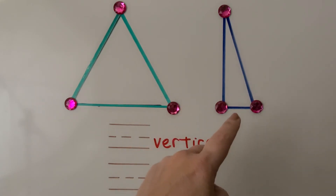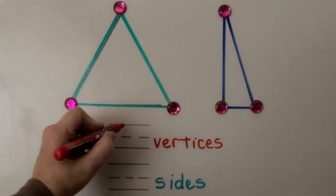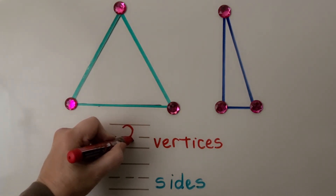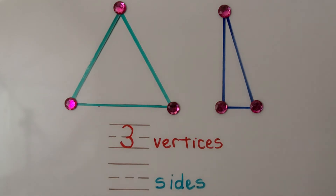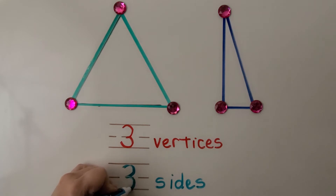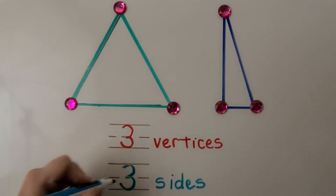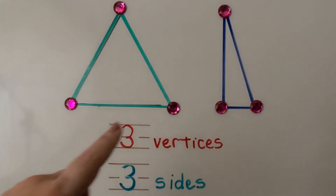Look how long this one is and how short this one is. So triangles have three vertices and they have three sides. And the three sides can be the same length or different lengths, as long as they meet at a vertex.